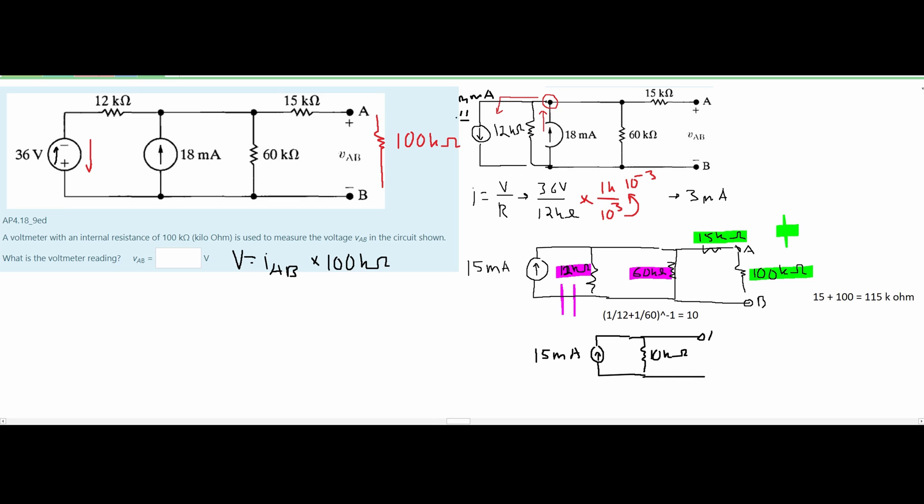And then we're going to have our terminals A and terminal B and in between them we're going to have our 115 kiloohms of resistance.